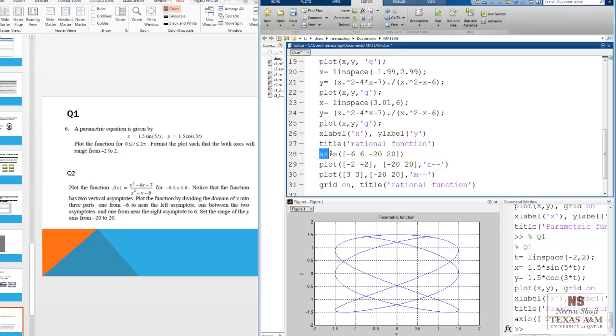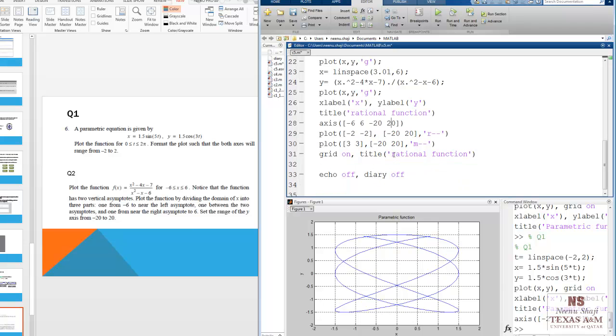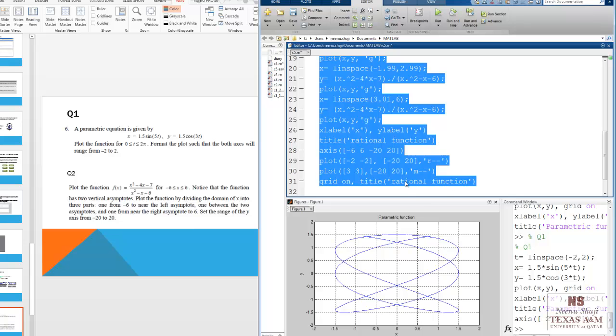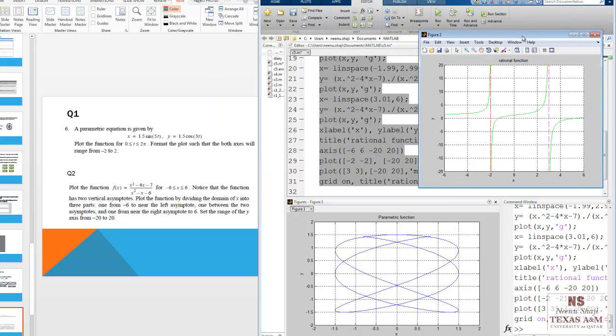Now, we have to change the axis limits using axis command. So axis negative 6 to 6 which is the x axis limits. And negative 20 to 20 which is the y axis limits. Now, we can plot the vertical asymptotes as well. So plot negative 2, 2 which is for the vertical asymptote at x equal negative 2. And the y points will be negative 20 and 20. Next vertical asymptote is at x equal 3. So 3, 3 in square brackets, negative 20, 20 in another square bracket. And it will be plotted as a magenta dashed line. You can put the grid on title for the rational function. And we can run this. So it comes in figure 2.